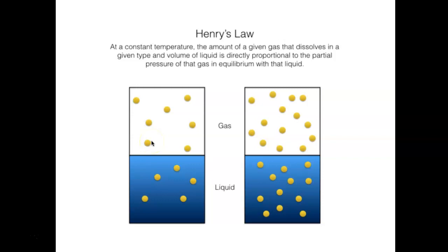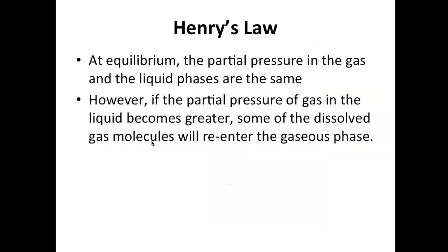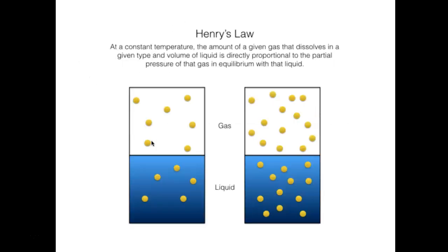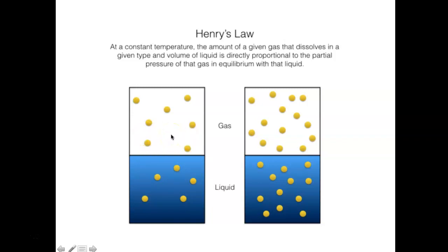Everything in nature tries to reach equilibrium. If the partial pressure of a gas in the liquid becomes greater than in the gas phase, some dissolved gas molecules will re-enter the gaseous phase to restore balance. This all relates to diffusion — things moving from high concentration to low concentration, trying to reach equilibrium.